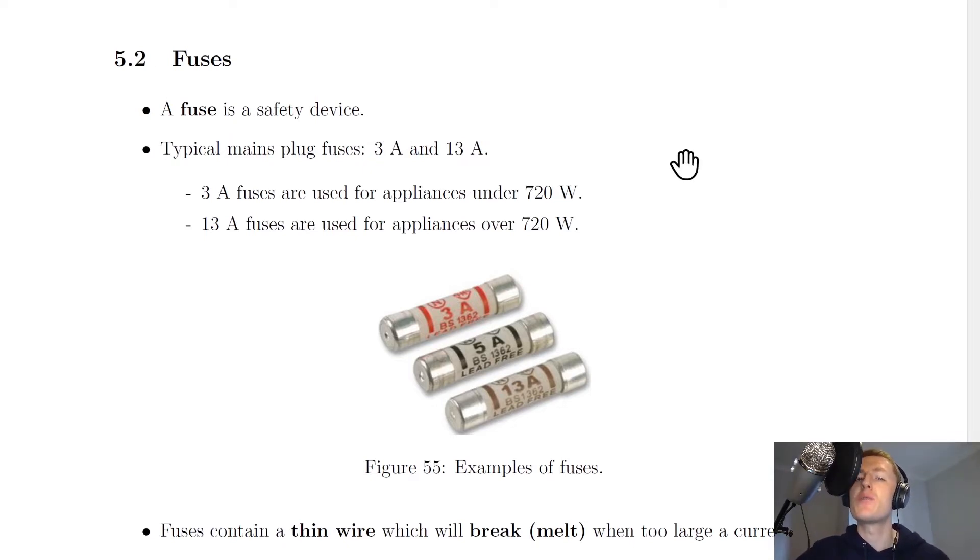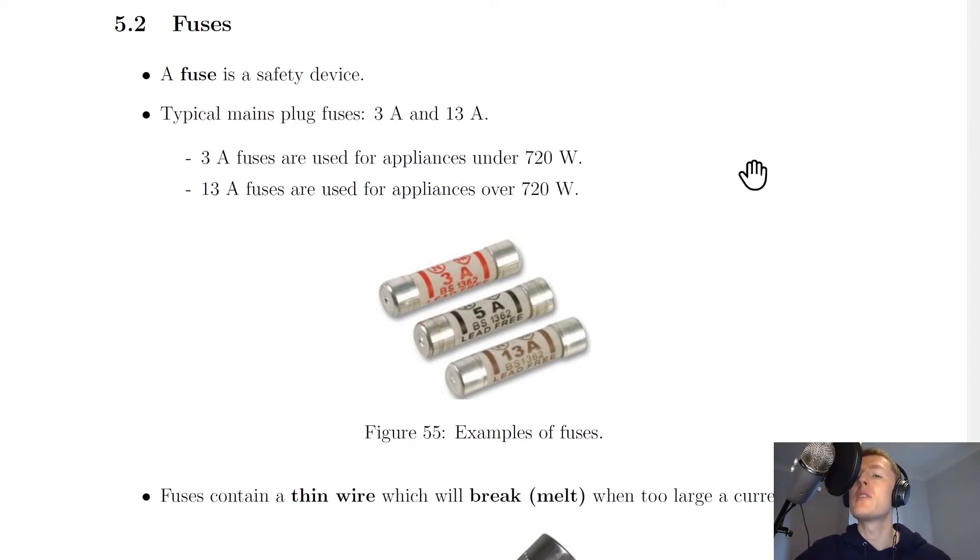There are two typical fuses that you need to be aware of for the National 5 course: the 3 amp and the 13 amp fuse. There are other fuses that exist, such as the 5 amp and the 10 amp fuse, but we won't be talking about these in the National 5 course. There's a certain cutoff point depending on the power rating of the appliance.